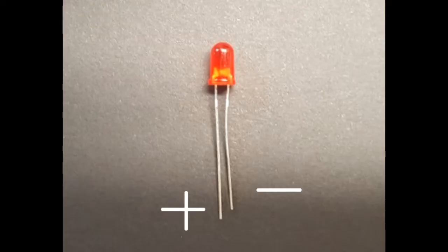An LED will have a long and a short leg. The long leg corresponds to the positive side and the short leg to the negative.